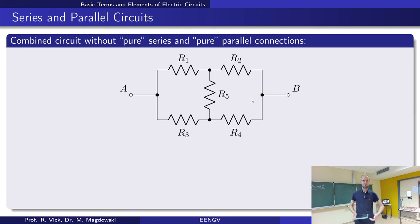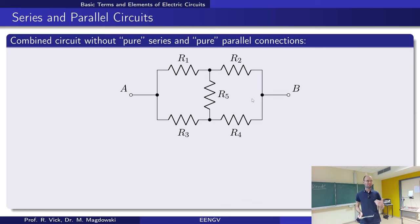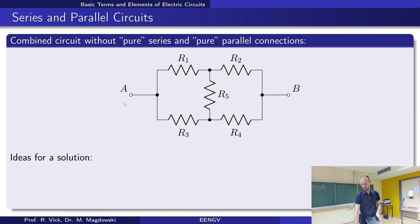So what do we do? We can always fall back to the more general laws we have learned: Kirchhoff's voltage law, Kirchhoff's current law, and of course Ohm's law. We can write down KVL and KCL equations at various loops and nodes, and from all those equations calculate all currents and voltages. Once we have all currents and voltages, we can then determine the total equivalent resistance between the two ports.